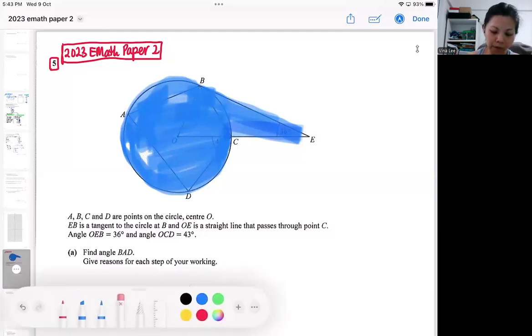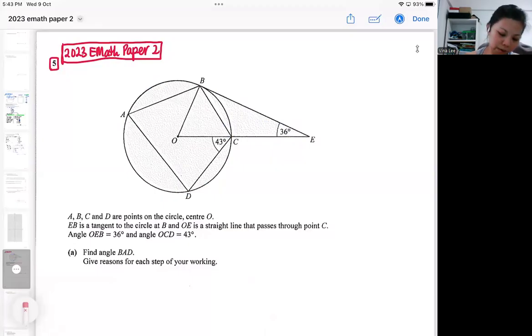That will be needed for the second part. Right now the first part is focusing on getting angle BAD. Usually if you start off by looking at the question, don't try to do everything first, go and plan it out first. I will see isosceles triangle and also I see radius and tangent. I put in whatever I can to see first, then I make a plan first.